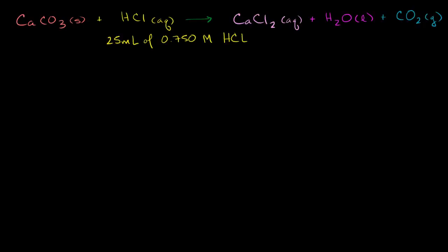What we want to do in this video is figure out the mass of calcium carbonate we need to react completely with 25 milliliters of 0.75 molar hydrochloric acid solution. We have the reaction here. The hydrochloric acid is dissolved in water — it is an aqueous solution. The 0.75 molar tells us the molarity, that is, the moles of hydrochloric acid per liter of the entire solution.